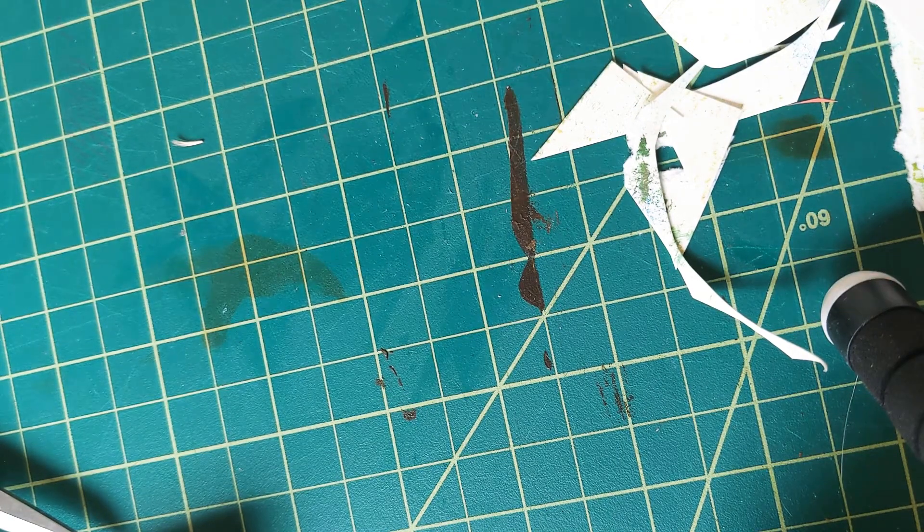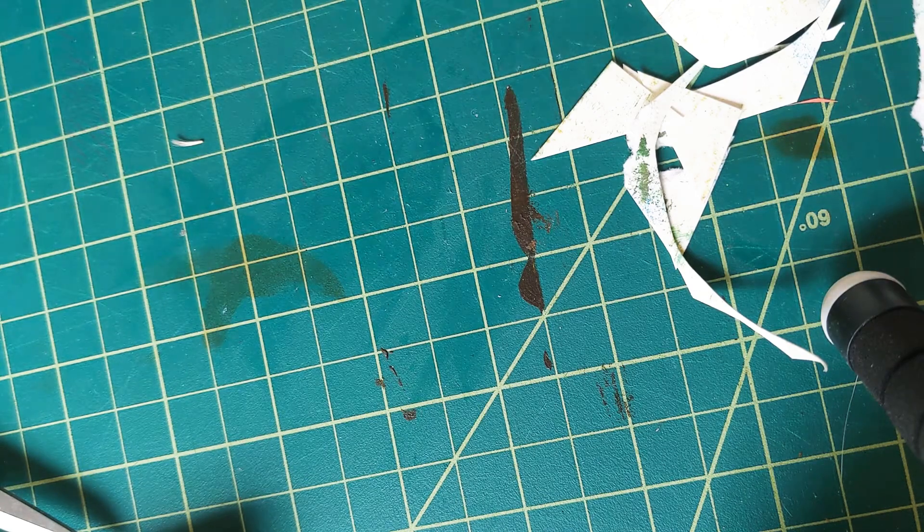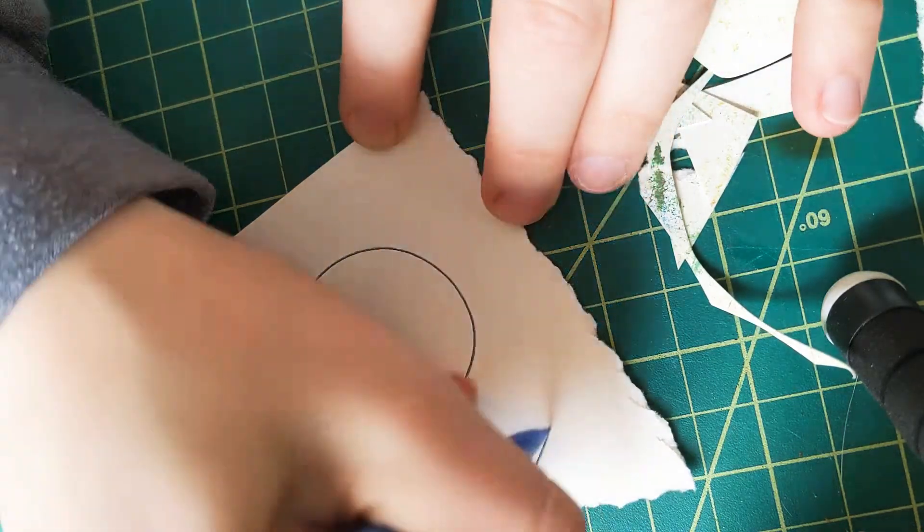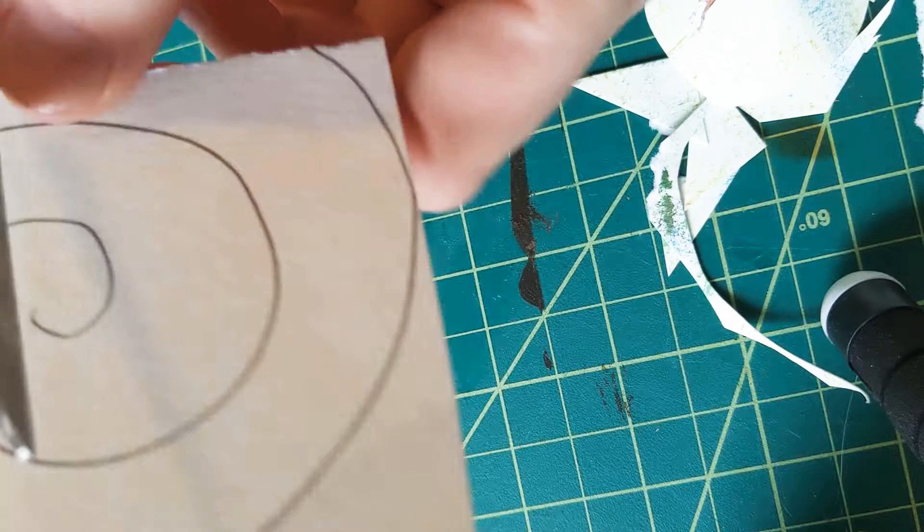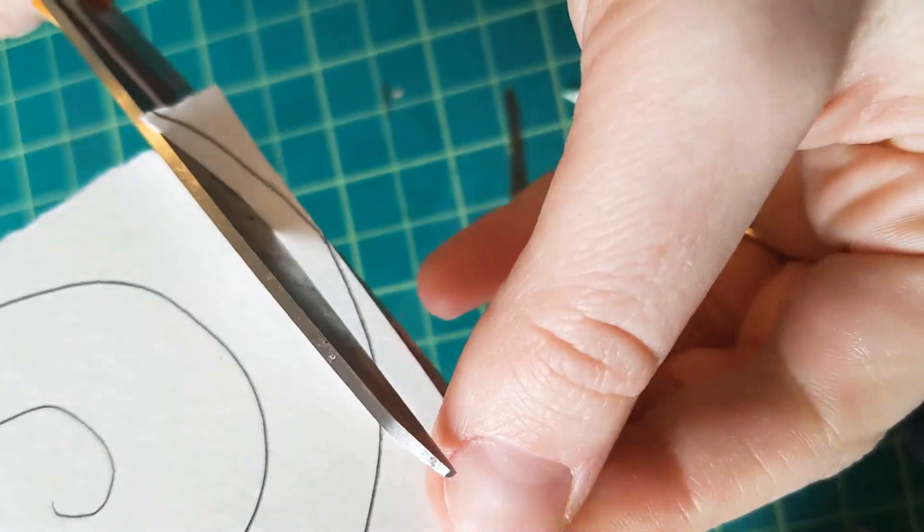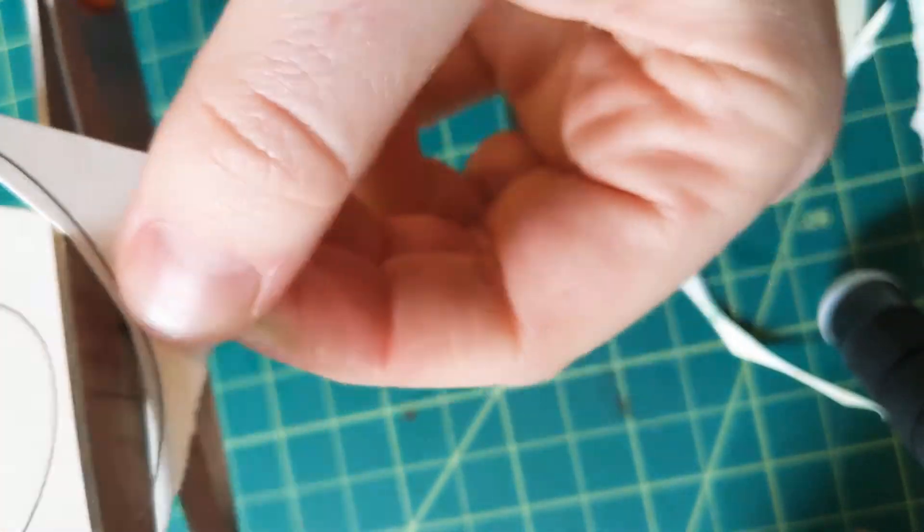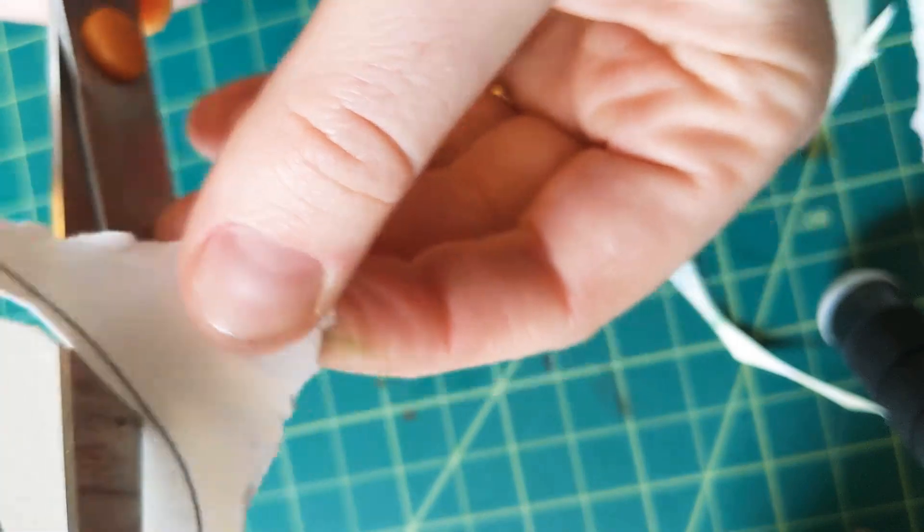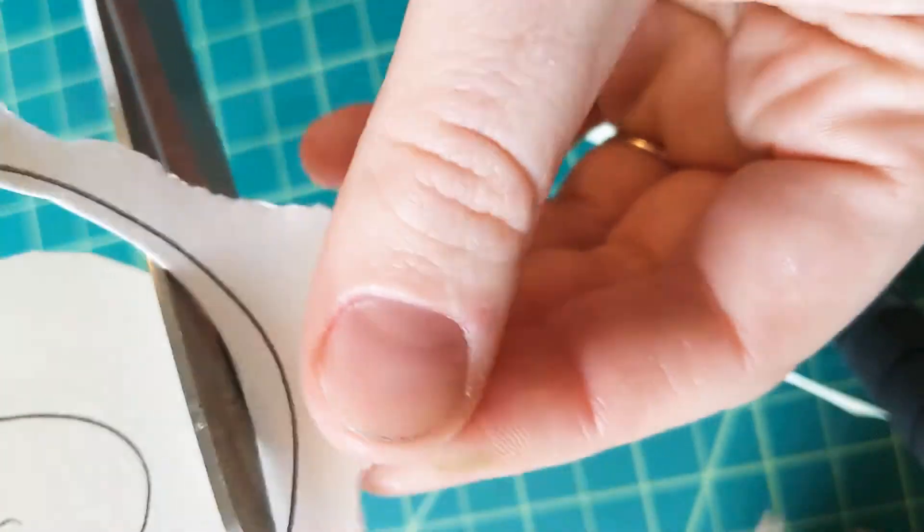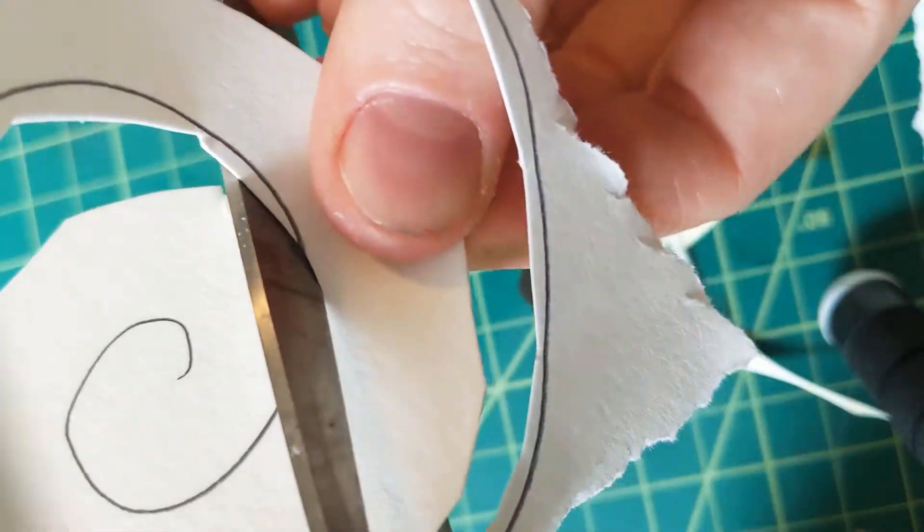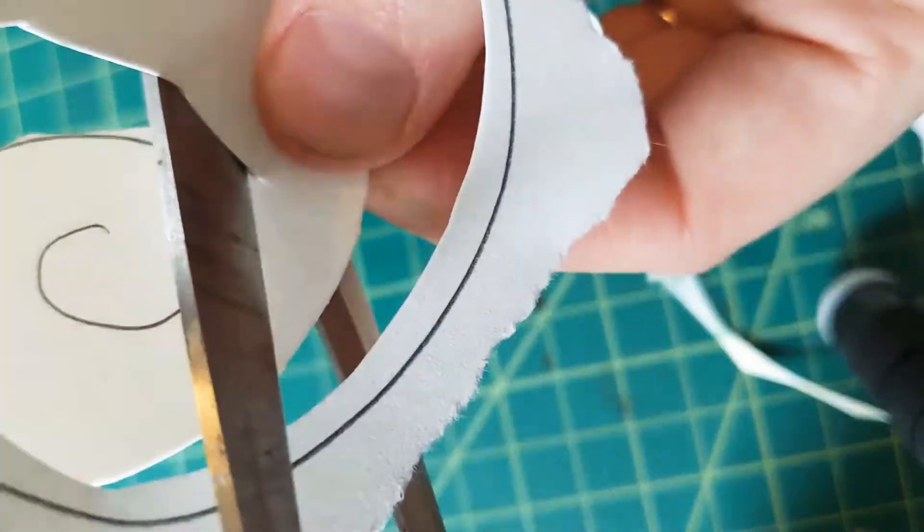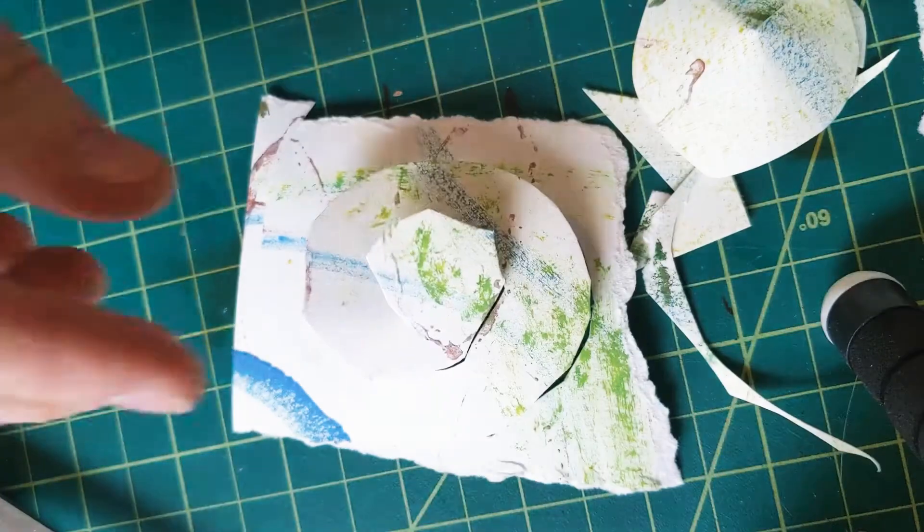So I still want to show you the zigzag spring, spirals, and weavings. We've got three left. For the spiral, I'm simply going to draw a spiral line on a piece of paper. You can experiment with how tight or loose to make the spiral. And I'm going to cut on the line. I got a little close to the edge, so I'm not cutting quite on that line.